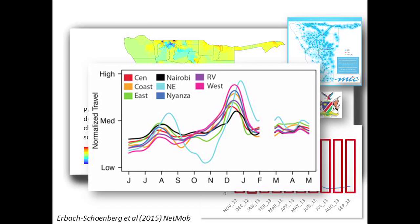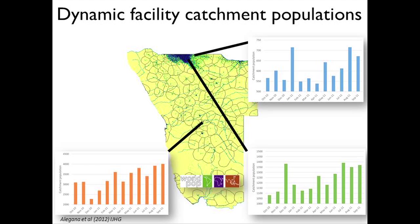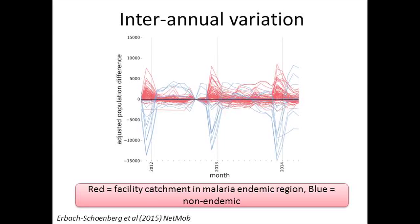Throughout the rest of the year, we see movement back to the capital with lots of changes all through the transmission season, not just around Christmas. We see similar holiday-related patterns in Kenya with large movements around December and January. The focus is on getting a better denominator for incidence mapping — we can map facility catchment areas and look at how populations change within them, seeing very different pictures even from facilities that are quite close together.